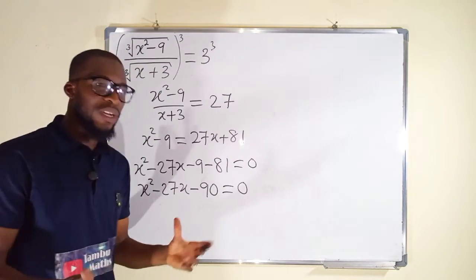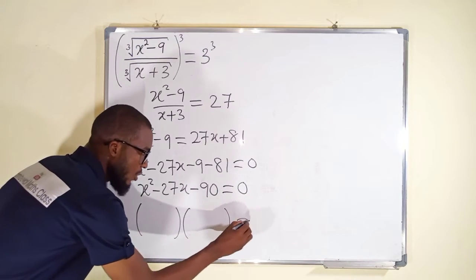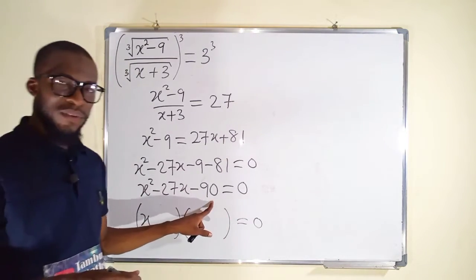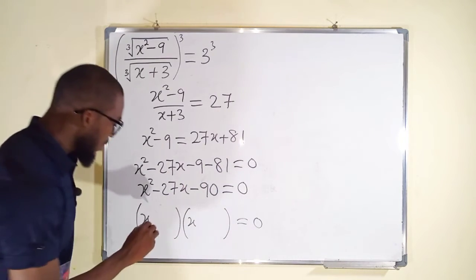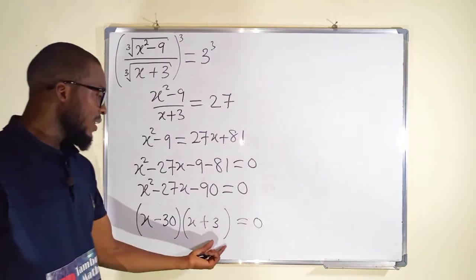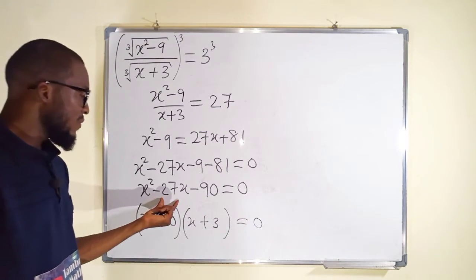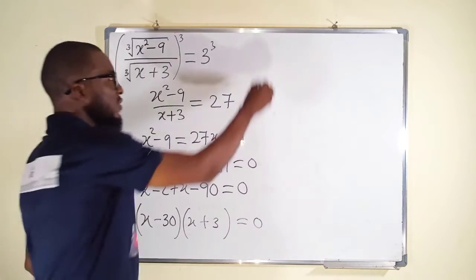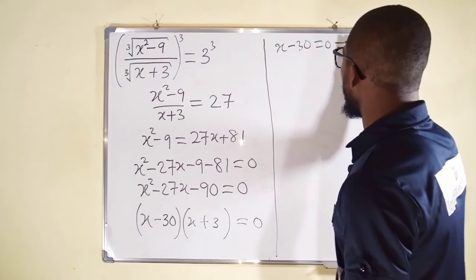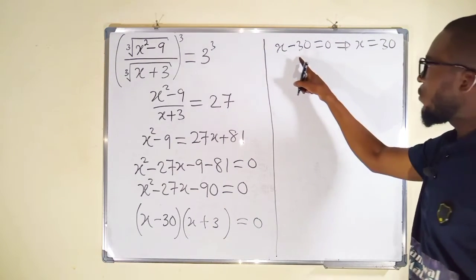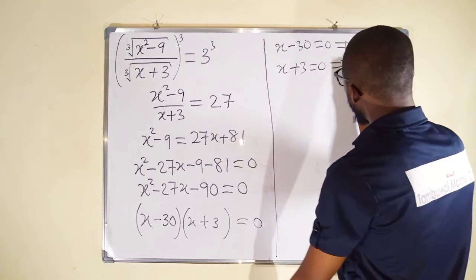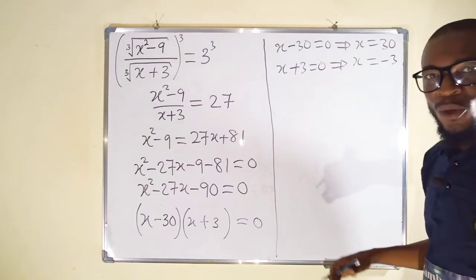Now we solve by factorization. We need two numbers that multiply to negative 90 and add to negative 27. Those numbers are negative 30 and positive 3, because negative 30 times 3 is negative 90, and negative 30 plus 3 is negative 27. Setting each factor to zero: x minus 30 equals 0 gives x equals 30, and x plus 3 equals 0 gives x equals negative 3. So we have two candidate solutions.